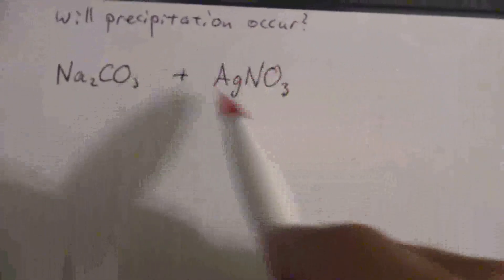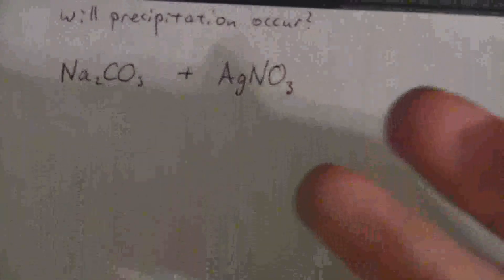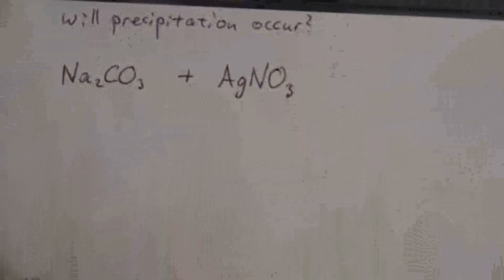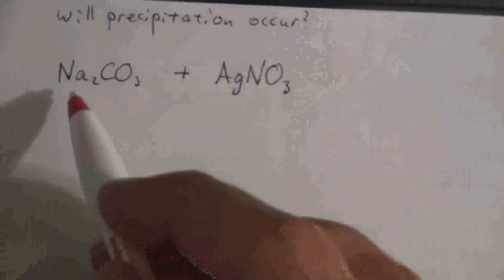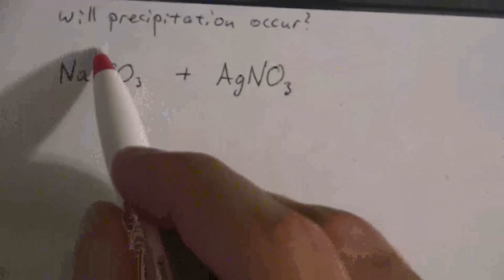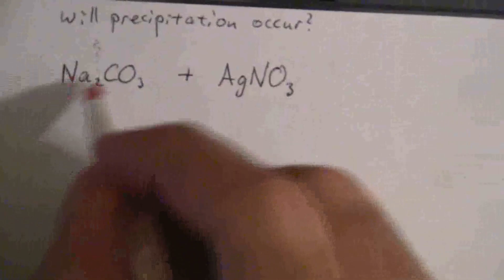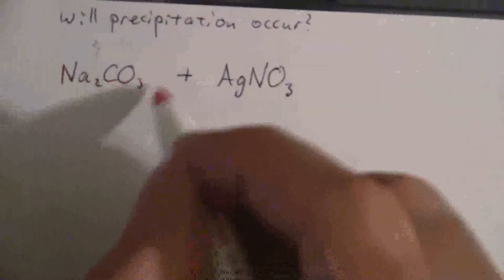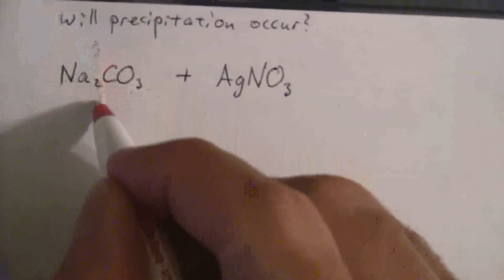Also nitrates, all nitrates are soluble. So both of these salts are soluble when mixed in water. So what does that mean? What happens when sodium carbonate is put in water? Well, the ionic compound is made from the positive cations and the negative anions. And when you put that in water, it separates.